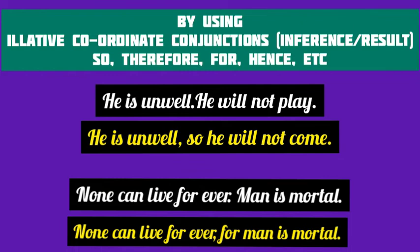Next, the two simple sentences are 'None can live forever' and 'Man is mortal.' Here the first sentence shows the inference or result. So we combine them using the coordinate conjunction 'for': 'None can live forever, for man is mortal.'